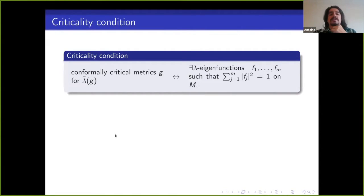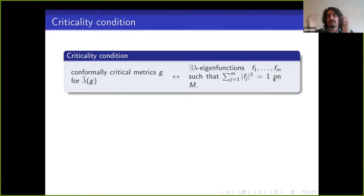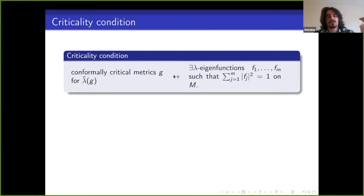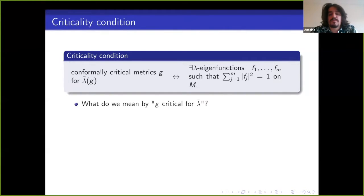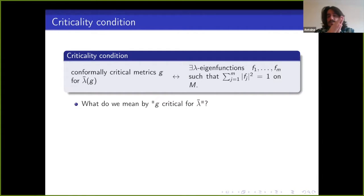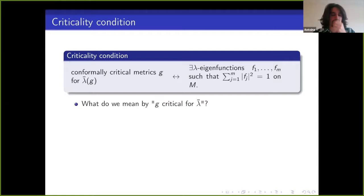What I want to derive is the criticality condition: if you have a conformally critical metric g for some normalized eigenvalue, then there exists a family of λ-eigenfunctions f_1 through f_m such that the sum of their norms squared equals 1 on the manifold. Conversely, such a family of eigenfunctions implies the metric is critical for that λ(g). I should clarify: I'm only focusing on conformally critical metrics within one conformal class throughout this talk.